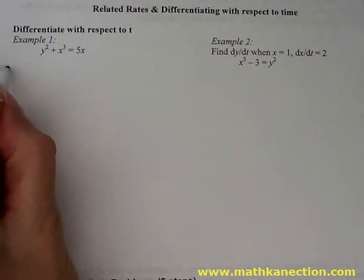To see about related rates, we're going to differentiate with respect to time each of the different functions. So for the first example, we have y squared plus x cubed is equal to 5x.